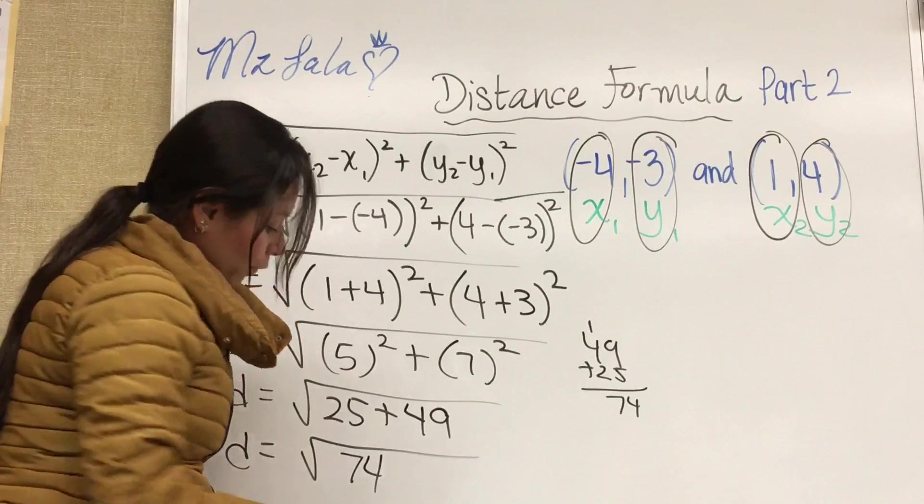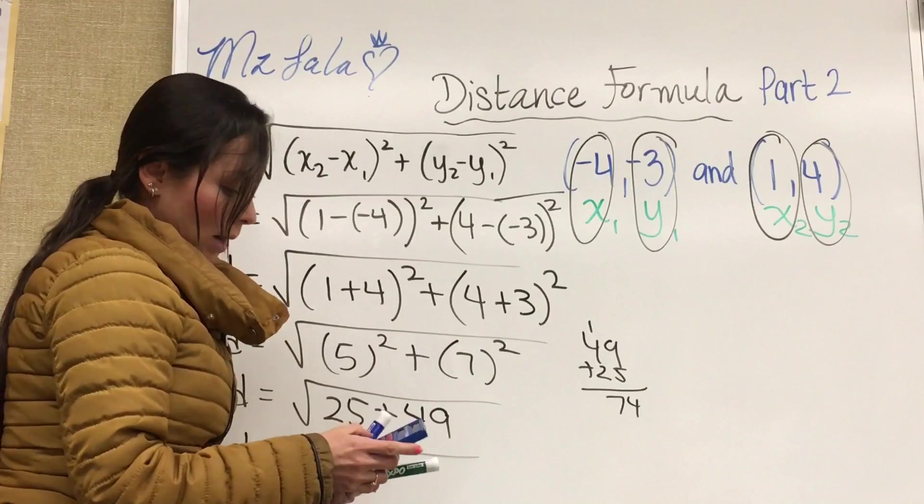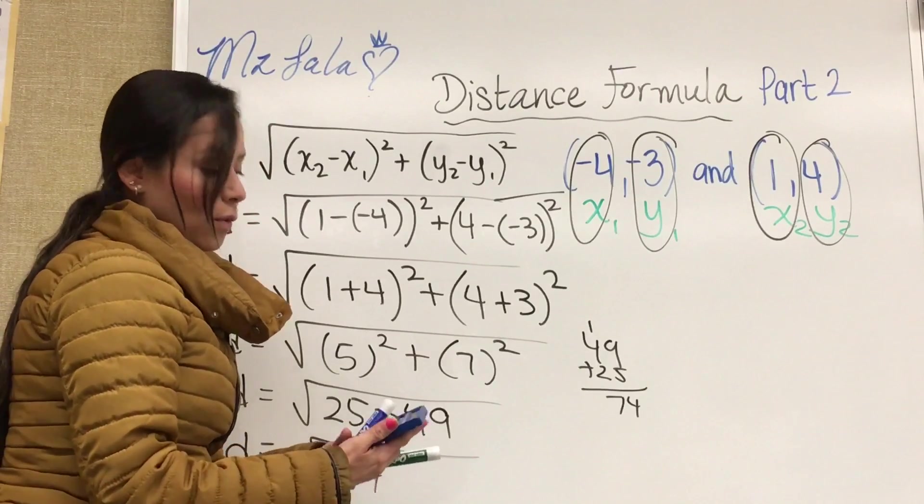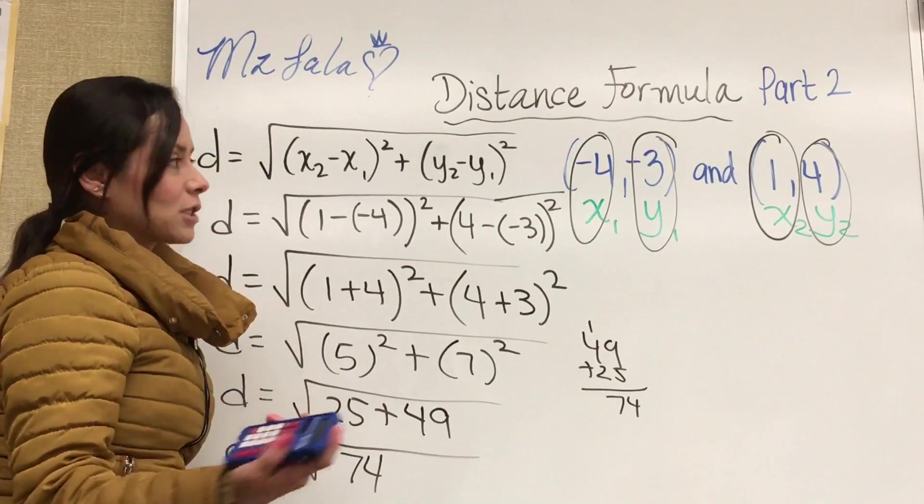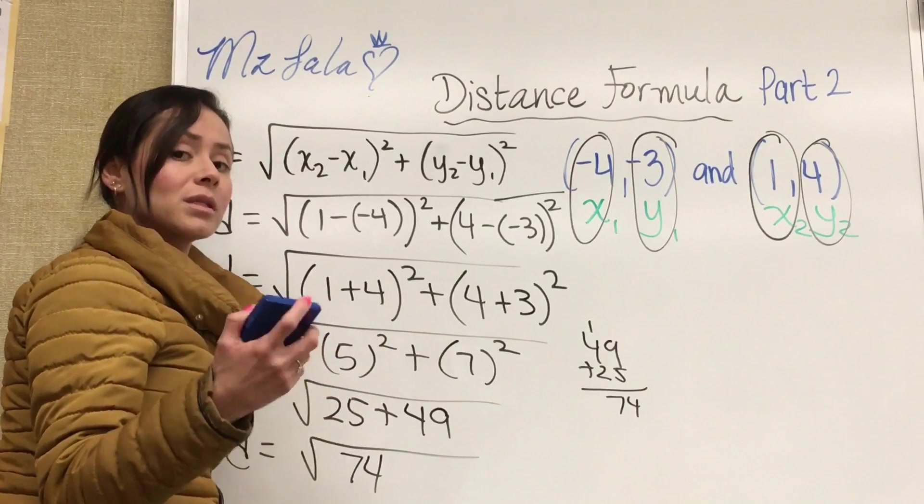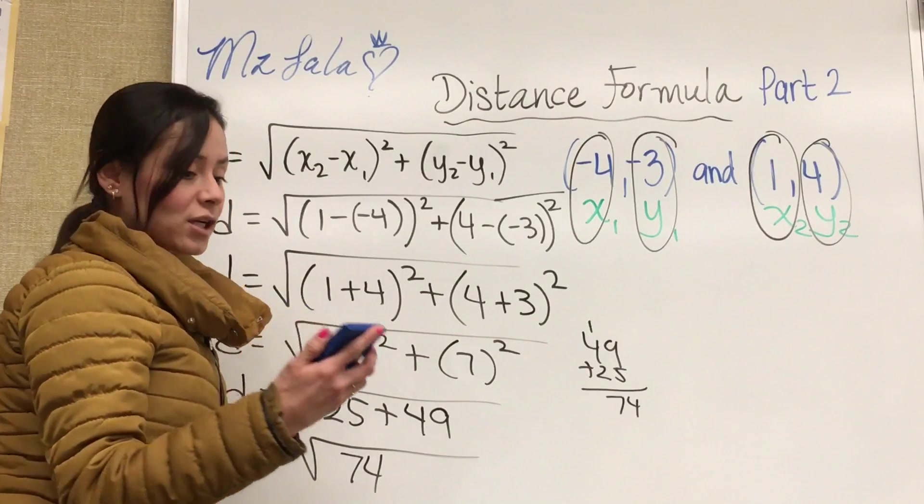74 does not have a perfect square so you can just grab a calculator, square that, and just round to the hundredths. Usually they'll tell you what they want you to round to the tenths or hundredths. I'm going to say hundredths.